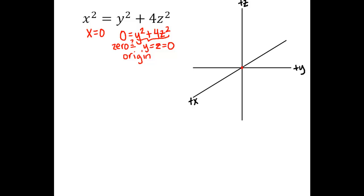So the only point on this cross-section is the origin — like an ellipse that has shrunk down to 0, with major and minor axes both of length 0. That tells us something important: the only place where our graph passes through the yz plane is at the origin. We'll plug in other values for x later, after we've done the other coordinate plane traces.